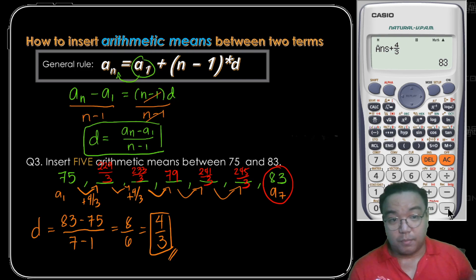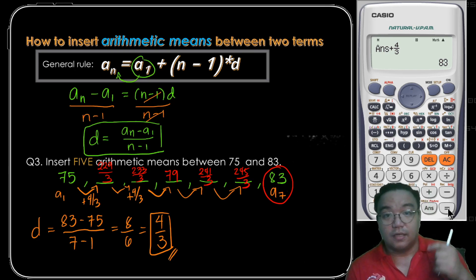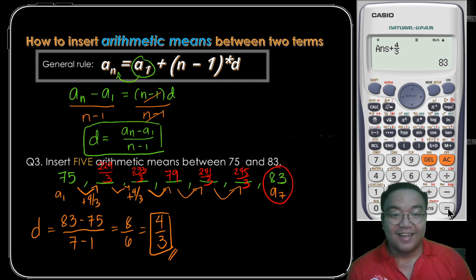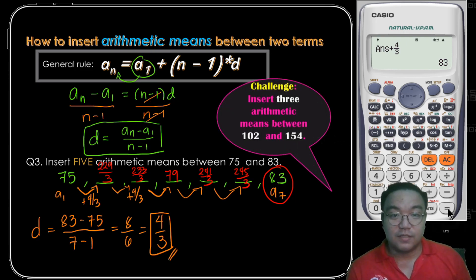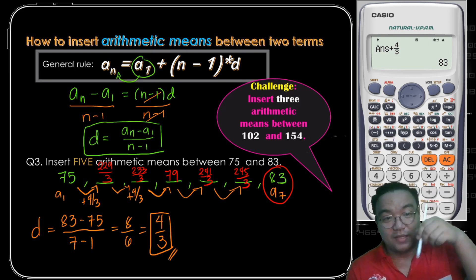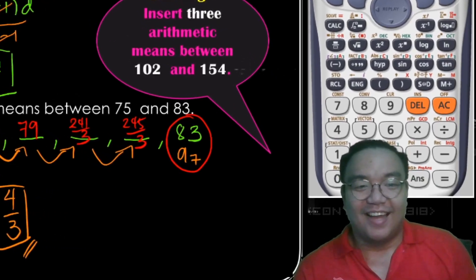Whether the common difference is a positive number, a negative number, or a fraction, all you have to do is follow the process and follow the formula. The challenge question for viewers: insert three arithmetic means between 102 and 154. Put your answers in the comments down below, and I hope you got something from today's lesson. See you in the next video!